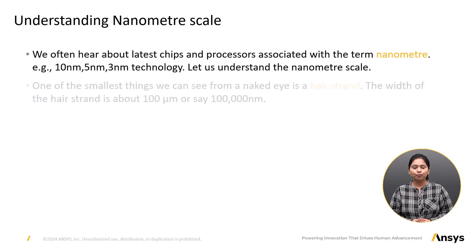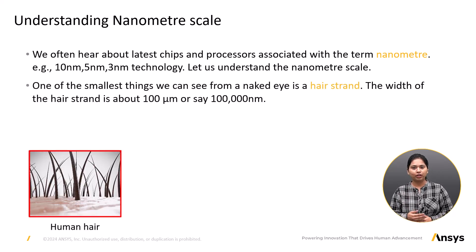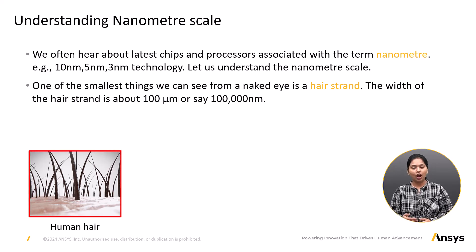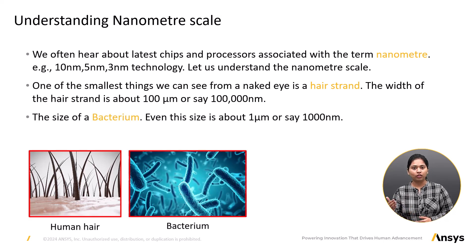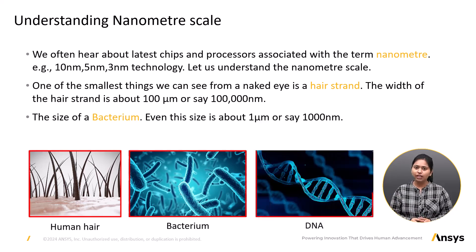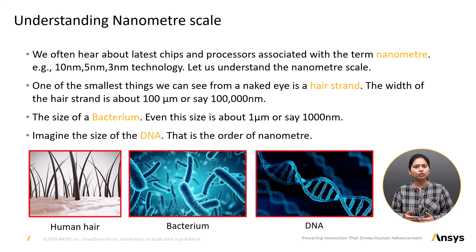To visualize this, consider the strand of a human hair, one of the smallest things visible to the naked eye. The diameter of a human hair is about 100 micrometers, or 100,000 nanometers. A bacterium is 100 times smaller than this, that is 1,000 nanometers. A DNA molecule is even 1,000 times smaller than a bacterium — that is the order of a nanometer.